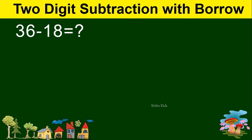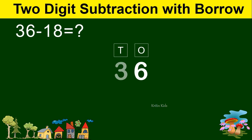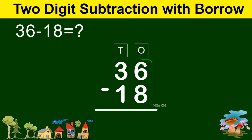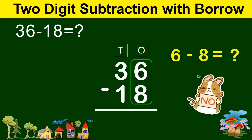Let's take another example: 36 minus 18. Let's arrange these numbers according to their place values. 6 comes under ones and 3 comes under tens. Likewise, 8 comes under ones and 1 comes under tens. We will start our subtraction from the ones place. 6 minus 8 — can we subtract 8 from 6? No.